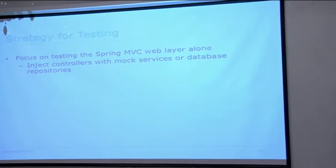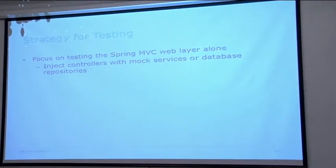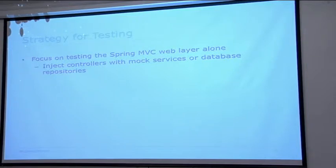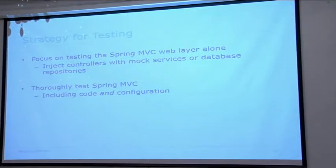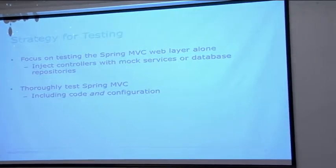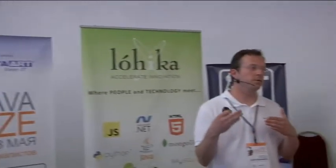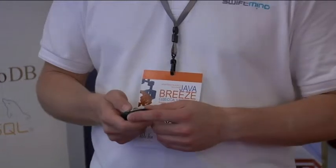Testing strategies: focus on testing the Spring MVC web layer alone. Inject mock services or mock repositories into your controllers — whatever collaborators your controllers have, mock those out following the standard OOP programming model. And test your Spring MVC configuration along with the code — not just a unit test of the code, but ensure your request mappings are right and that marshalling and automatic type conversion work as expected.